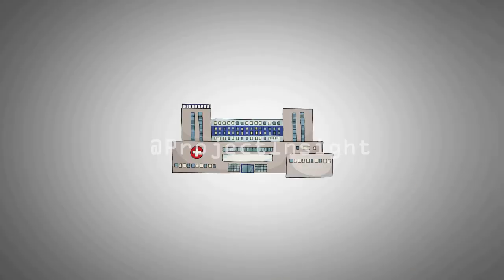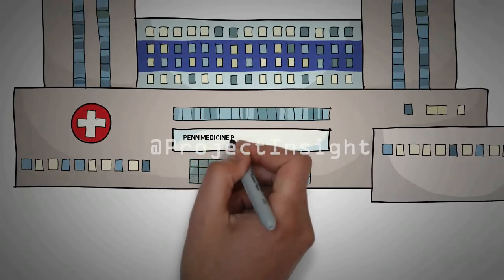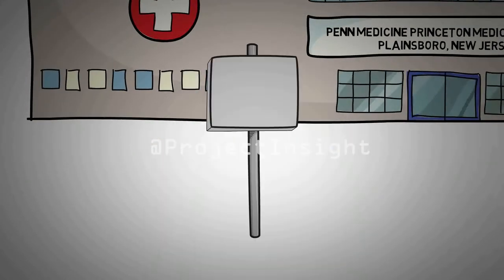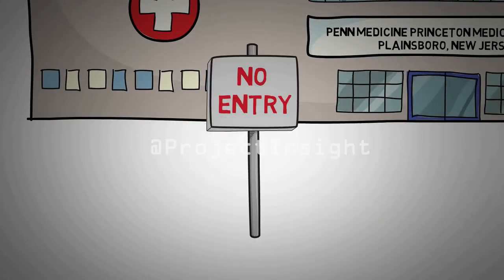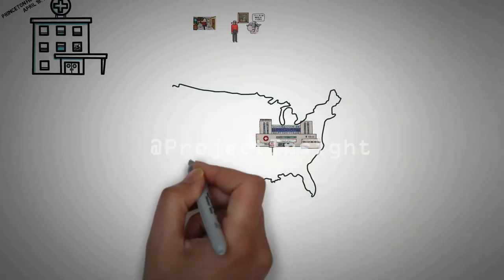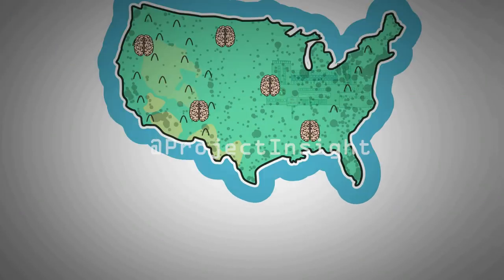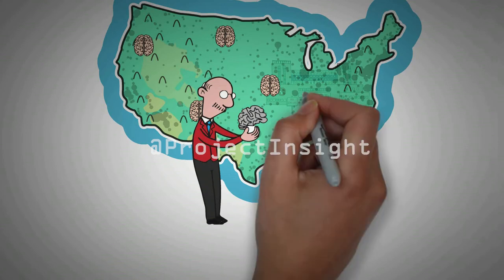Today, what remains of Einstein's brain resides at the Penn Medicine Princeton Medical Center in Plainsboro, New Jersey. Almost nobody is allowed to see it, not even researchers. But many more pieces of Einstein's brain can possibly still be found across America, thanks to Dr. Harvey's habit of giving away pieces of it to curious friends.